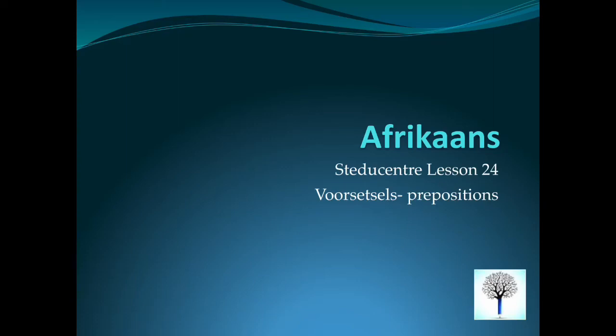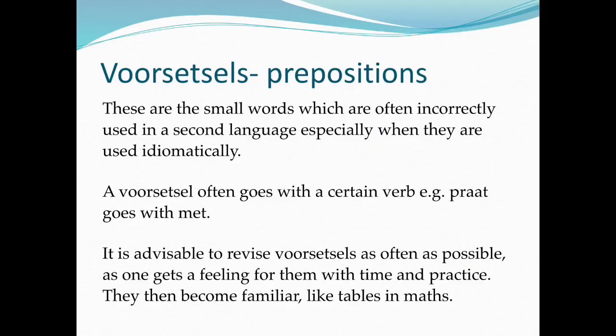Afrikaans Statue Center, Lesson 24. Voorsetzels — Prepositions. These are the small words which are often incorrectly used in a second language, especially when they are used idiomatically.